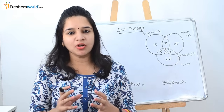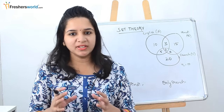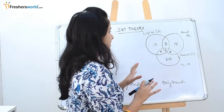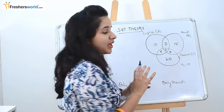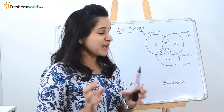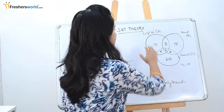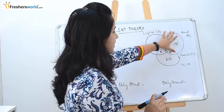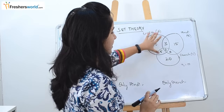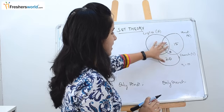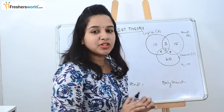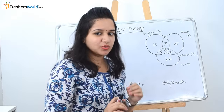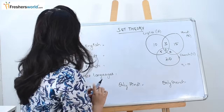I will explain the concept along with an example. The question I am taking here involves a set of people speaking the languages English, Hindi and French. I have taken it as a 3-circle Venn diagram with certain numbers in it. Let's get started with one question so that we will understand the concept better.